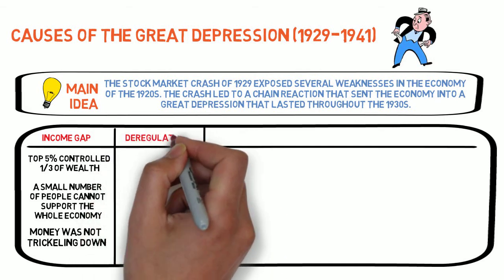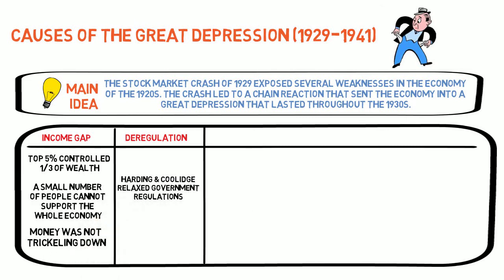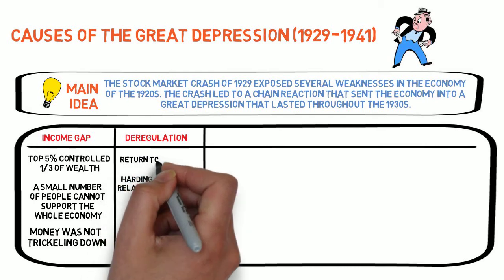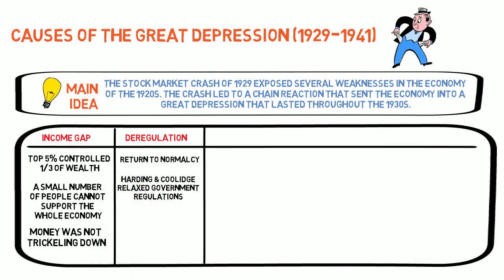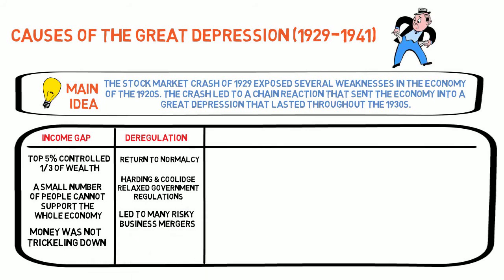Another problem with the economy was a massive deregulation effort by the federal government. During the previous 30 years, during the Progressive Era and World War I, there was much more government regulation of business. Teddy Roosevelt, Taft, and Woodrow Wilson all had a reputation for breaking up trusts and monopolies. When Warren Harding was elected president in 1920, he promised to reverse this trend, calling it a return to normalcy. Warren Harding died in 1923, but his successor Calvin Coolidge continued this deregulation trend, stating that the business of America was business. Now free from government regulation, many corporations began a frenzy of mergers and acquisitions. This did lead to short-term growth, but it was also problematic.